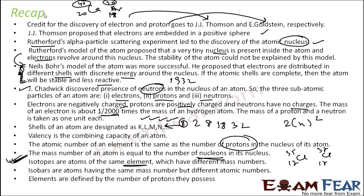Elements are defined by the number of protons they possess. This is very critical. The number of protons is nothing but the atomic number, so atomic number is unique for a given element.